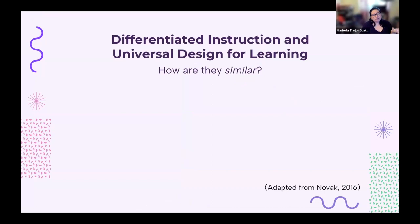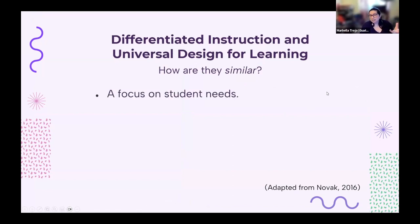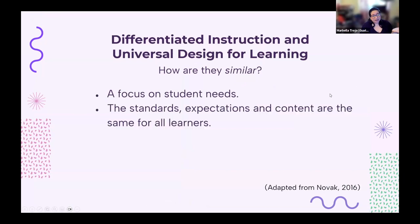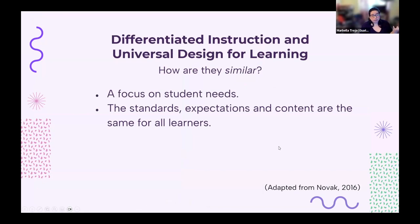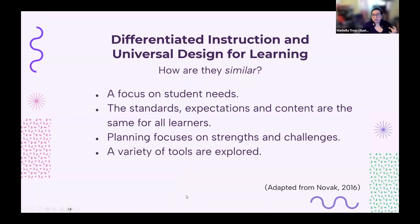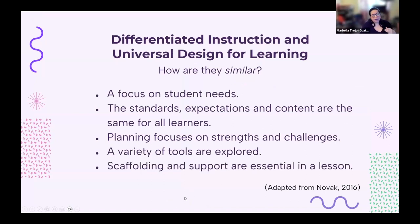Differentiated instruction and Universal Design for Learning are very similar in some senses. You're thinking about student needs, standards, expectations, and content — because these are the same for all learners. You're thinking about planning that focuses on strengths and challenges, a variety of tools that can be explored, and scaffolding and supporting, which is essential for learning in general.